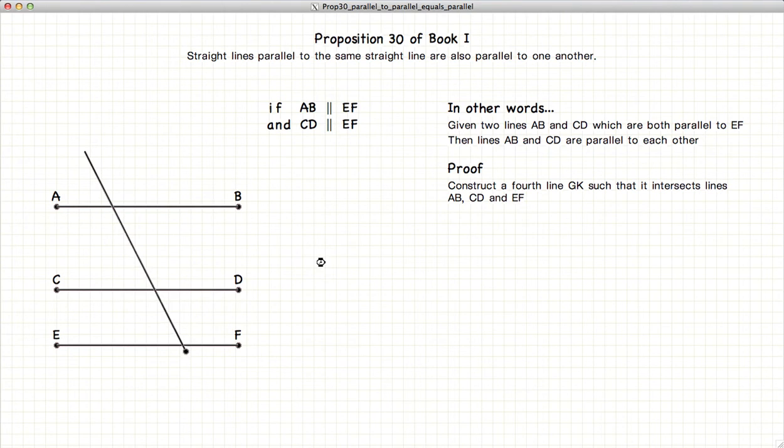We demonstrate this by drawing a line through our three parallel lines. Since AB is parallel to EF, according to Proposition 29, angle AGH (alpha) equals angle HKF (gamma). So alpha equals gamma by Proposition 29.